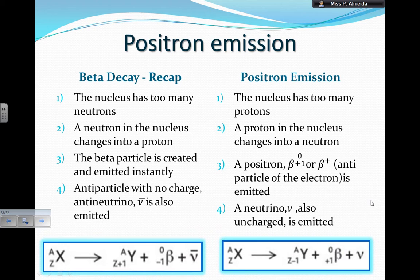Beta decay and positron emission are really similar — if you know one, you know the other. Starting with nucleus X giving nucleus Y — the same so far — in beta decay you get zero, minus one (the beta particle), while in positron emission you get zero, plus one (the positron), with symbol mu for the neutrino, versus the anti-neutrino in beta decay.